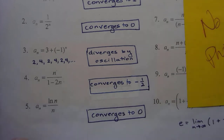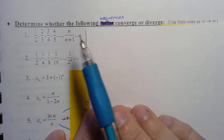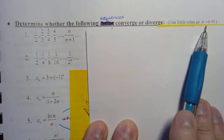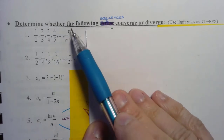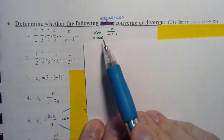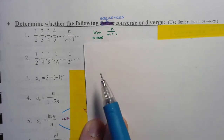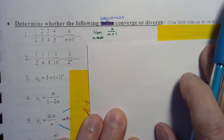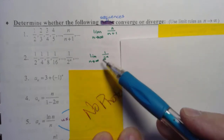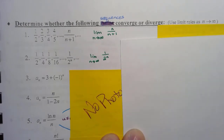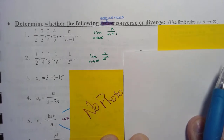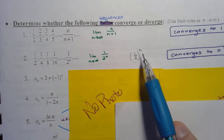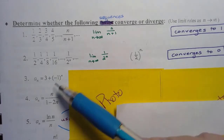As part of your TPs, you're going to do the rest of this page — determining whether sequences converge or diverge using our limit rules as n goes to infinity. We can see the pattern: the limit as n goes to infinity of n over n plus 1 converges to 1. The limit as n goes to infinity of 1 over 2 to the n converges to 0. You could write that as 1 half to the n, but it converges to 0. You'll do the rest as part of your TPs.